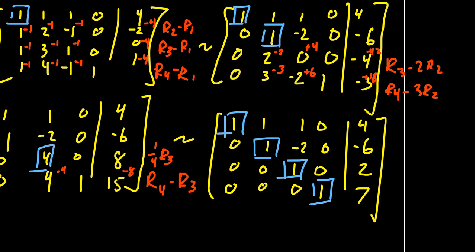So starting with the backwards phase, the 4,4 position is already a 1, that's great. And everything above it is already a 0. So then I'm going to start focusing on the 3,3 spot. It's a 1, that's great. And so I've got to get rid of this negative 2 right here. We're going to do row 2 plus 2 times row 3. So we get plus 2 and plus 4.